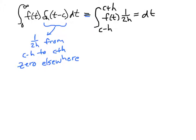So then we can just pull the constant, the 1 over 2h, outside of the integral and do an integral from c minus h to c plus h of f of t dt.